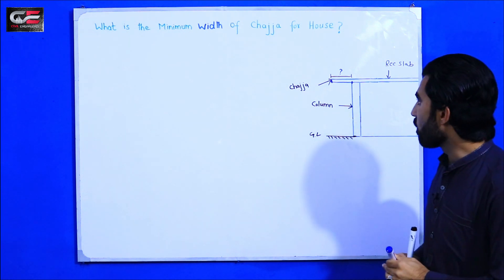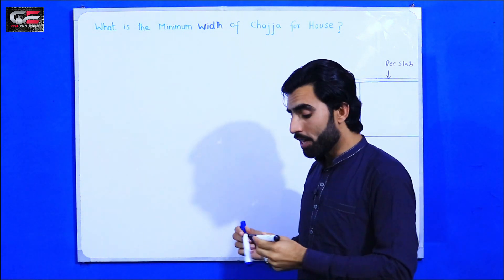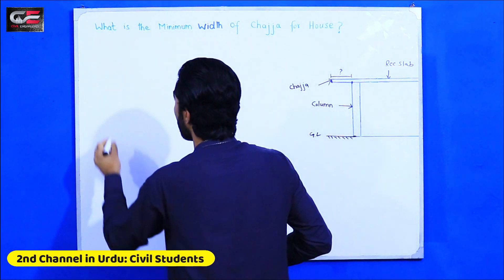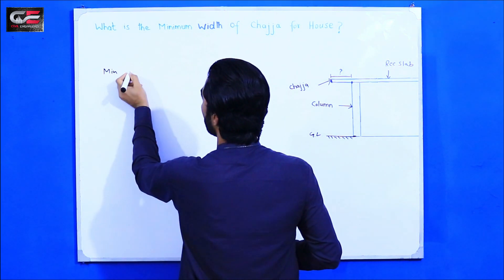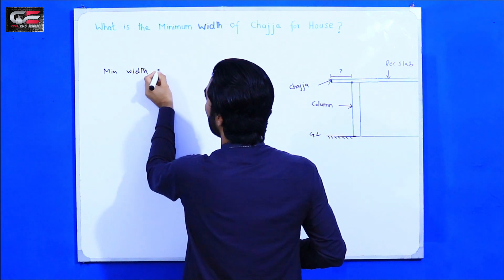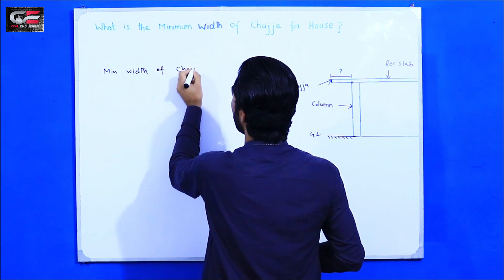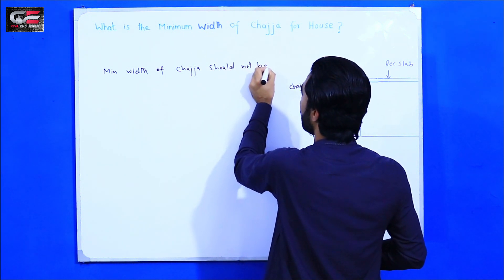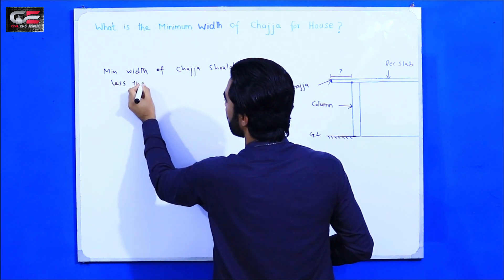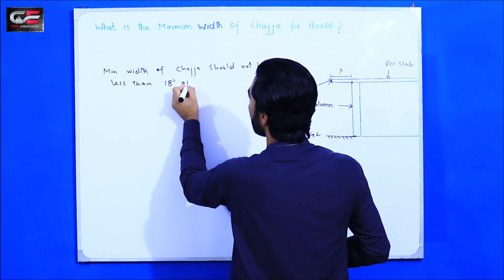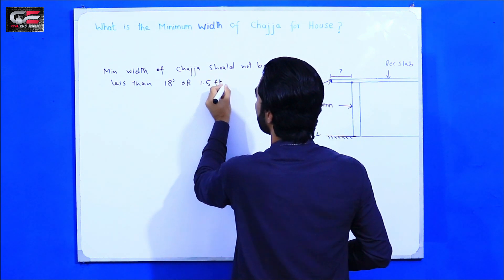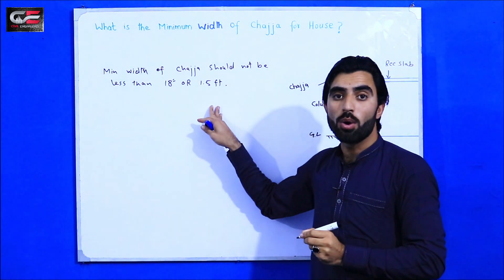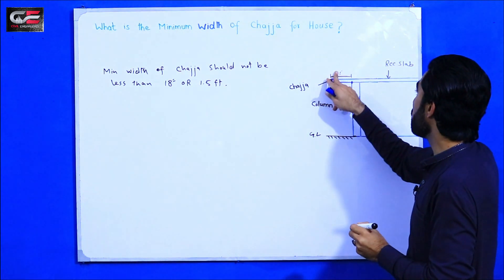The minimum width of chadja should not be less than 18 inches or 1.5 feet. The minimum width of chadja should not be less than 18 inches or 1.5 feet — so it should be minimum 18 inches or 1.5 feet.